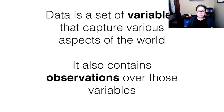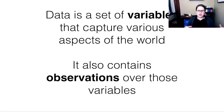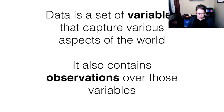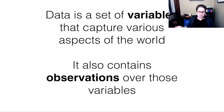Data is a set of variables that capture information about aspects of the world. Variables are called variables because they vary — they are not always the same. So you could think about temperature as a variable, because temperature is not always the same. Data contains variables, and it also contains observations, which are times when we've been able to look at those variables.